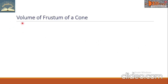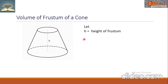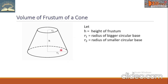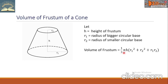For the volume of a frustum, we have height H, R₁ as the radius of the bigger circular base, and R₂ as the radius of the smaller circular base. The volume formula is: (1/3) × π × H × (R₁² + R₂² + R₁ × R₂).